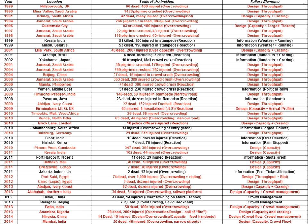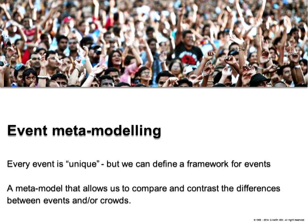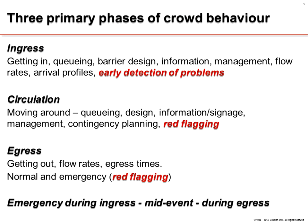Most people look at events and think they are so fundamentally unique to their site that no model could apply. But in fact there are very simple principles that can be applied. Over the last 25 years we have developed a metamodel which fits all events. An event has three primary phases of crowd behaviour: ingress — people coming in, including the queuing barrier system, information management flow, and all attributes of getting into a venue — and then the crowd moves into a circulation phase.